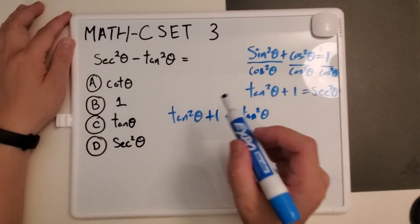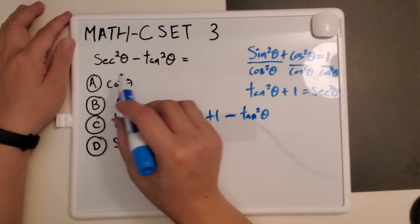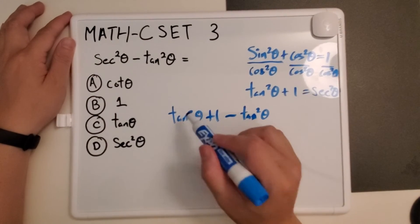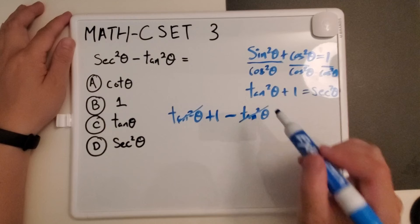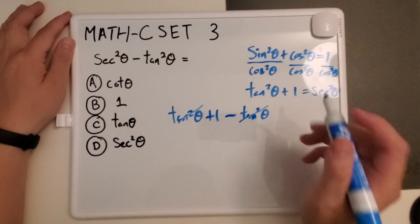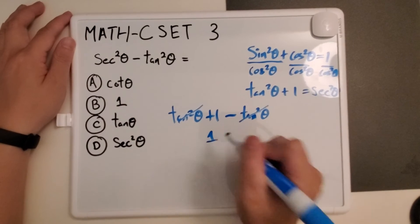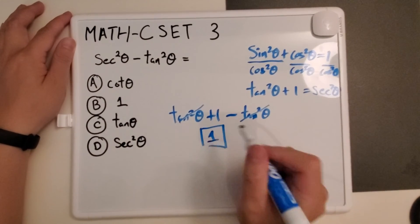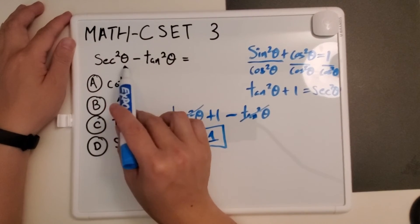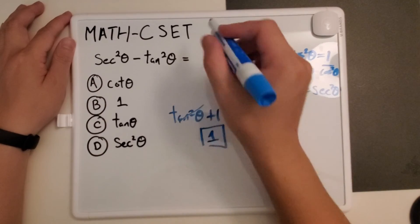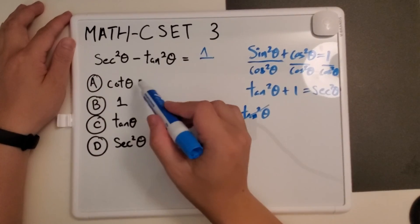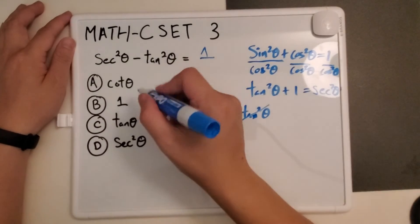And now when this gets replaced and substituted, tangent squared and tangent squared cancels out, and all you're left with is just our 1. And so therefore, secant squared theta minus tangent squared theta equals 1, and that is one of our choices, which is B.